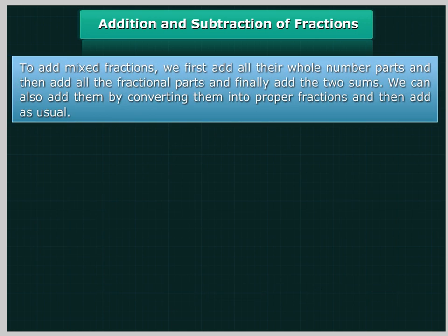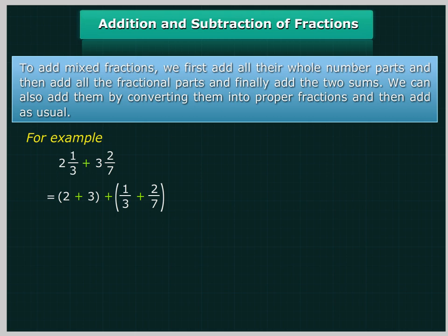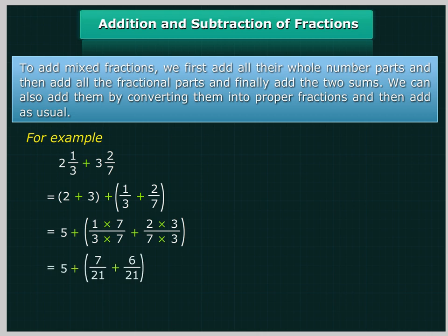To add mixed fractions, we first add all their whole number parts, then add all the fractional parts, and finally add the two sums. We can also add them by converting them into improper fractions and then adding as usual. For example, 2 and 1 upon 3 plus 3 and 2 upon 7 is equal to (2+3) plus (1×7)/(3×7) + (2×3)/(7×3), which is equal to 5 plus 7 upon 21 plus 6 upon 21, which is equal to 5 plus 13 upon 21, equal to 5 and 13 upon 21.